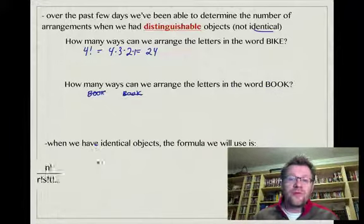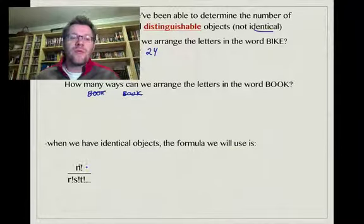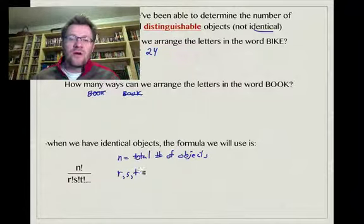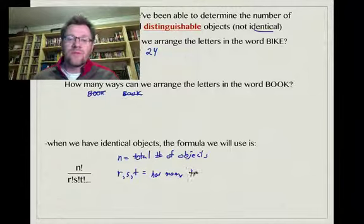The formula we're going to use is this one here: n factorial divided by r factorial, s factorial, t factorial. So n is your total number of objects, and r, s, and t are things that are repeated and how many times they're repeated. So, how many times an object is repeated.